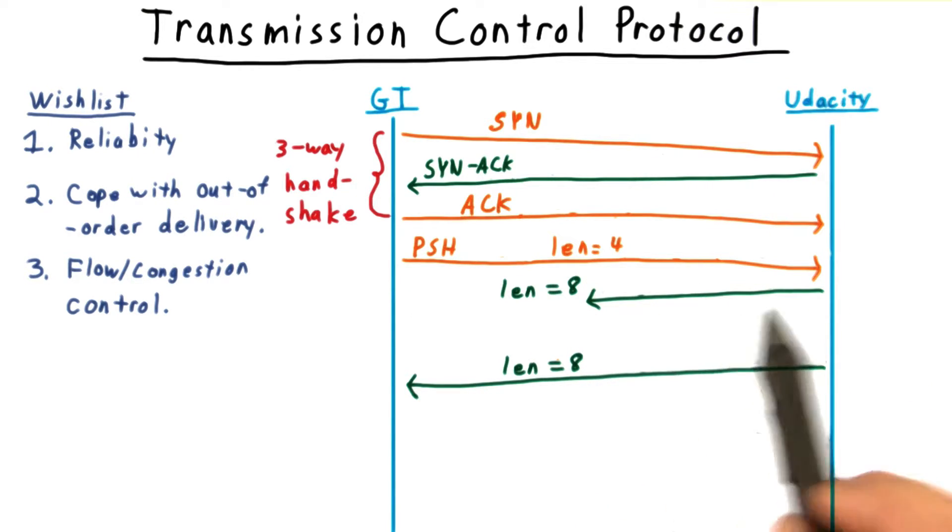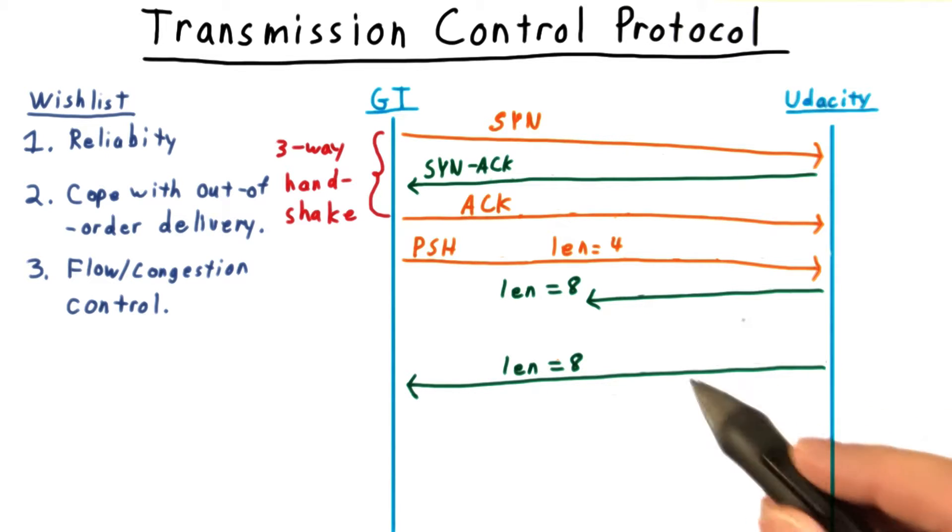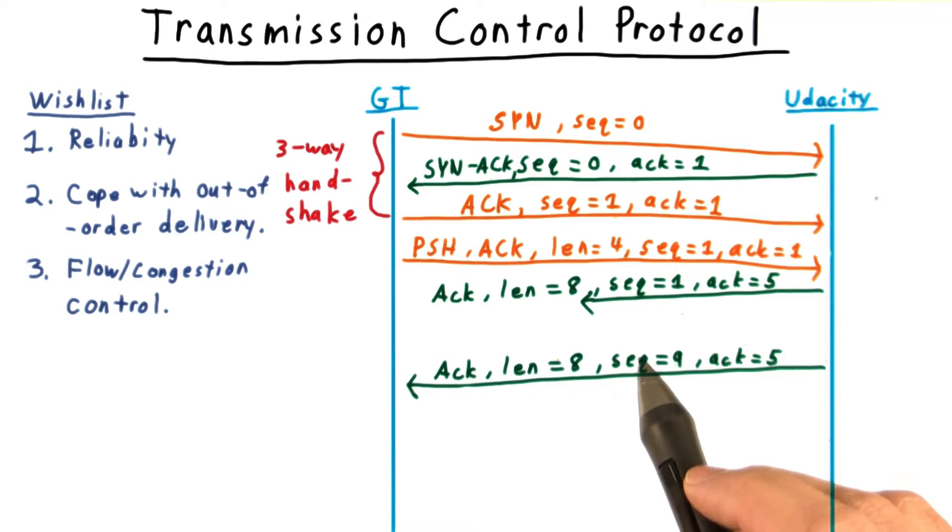In our example, let's suppose that the first packet doesn't make it. We would like a way to detect the situation. Here is TCP's solution. After the initial handshake, packets, or segments as they are called in TCP parlance, indicate how much data the other side should have received already, and also how much data the sender has received. The former is called the sequence number, and the latter, the acknowledgement number.